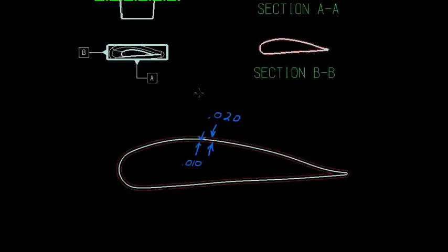That tolerance of 20 thousandths of an inch for the profile of the line is saying that at any cross section cut on this blade, the resulting profile at that section would have to lie within a 20 thousandths of an inch wide tolerance zone, split equally — 10 thousandths per side of the true profile.